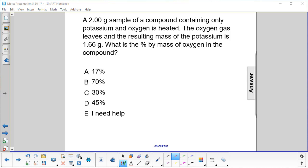A 2.00 gram sample of a compound containing only potassium and oxygen is heated. The oxygen gas leaves and the resulting mass of the potassium is 1.66 grams. What is the percent by mass of oxygen in the compound?